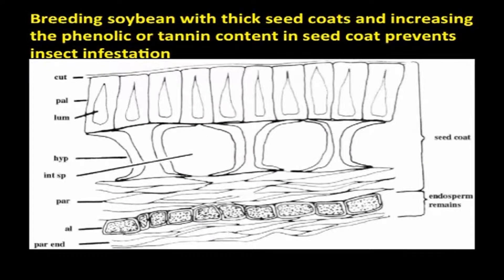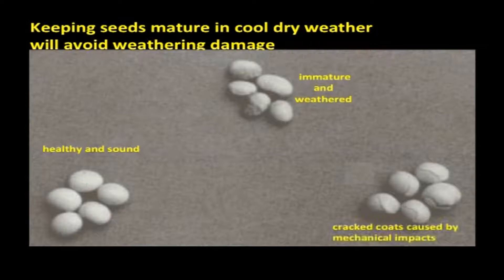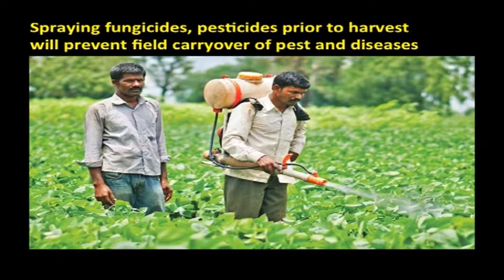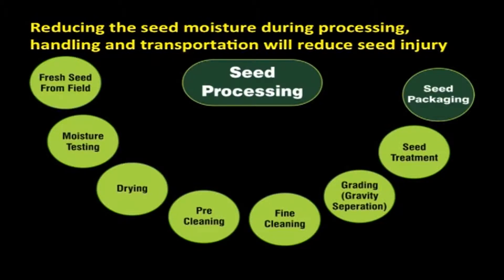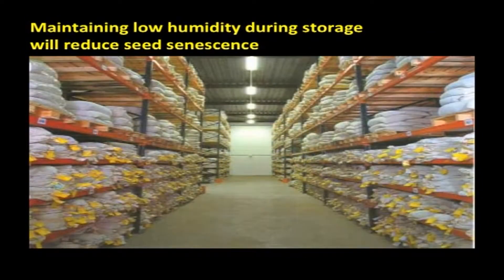Knowing the causes for seed senescence, how do we go about protecting seeds? Since we cannot do much about genetic causes, we try to breed soybean with thick seed coats and increase the phenolic or tannin content in the seed coat to prevent insect infestation. We can manipulate eccentric causes by planning seed production such that seeds mature in cool, dry weather and avoid weathering damage. Protecting seeds by spraying fungicides and pesticides prior to harvest will prevent field carry-over of pests and diseases. Preventing seed damage during processing, handling, and transport, and reducing seed moisture content to safe levels, will reduce seed injury. Maintaining low humidity during storage will reduce seed senescence.